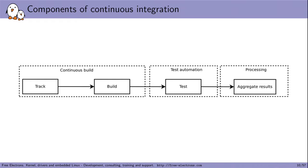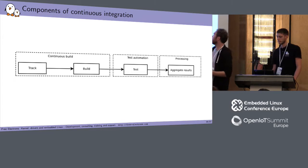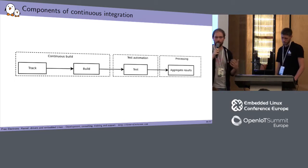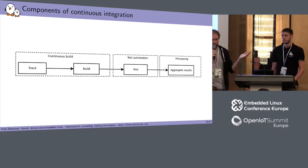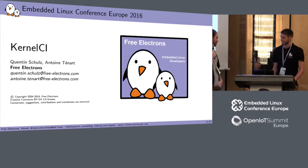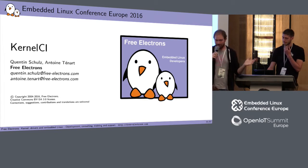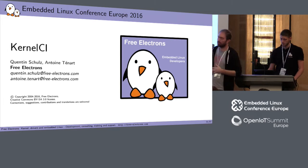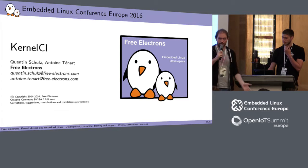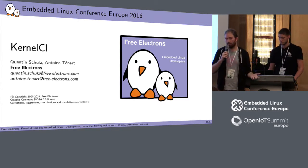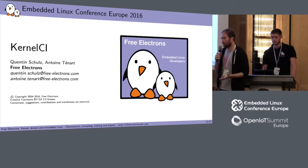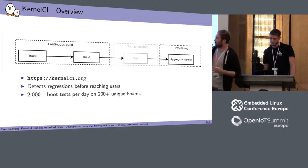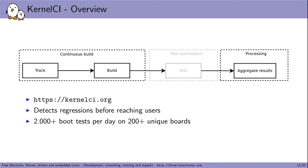Once you've launched your tests, you want to gather the results to know if there were any bugs or regressions — this is the processing part. Now we'll look at what kernel CI is doing. Kernel CI is responsible for the continuous build part and the processing of results, but not the test automation part. So if you want to integrate a board farm into kernel CI, you need to implement the test automation part, but the rest is already done for you.